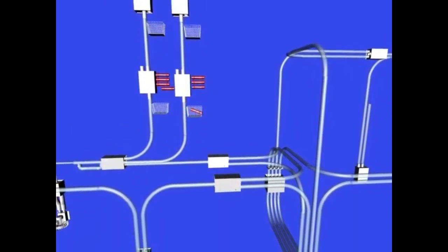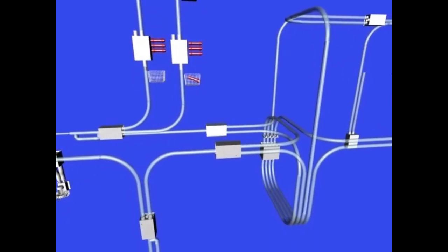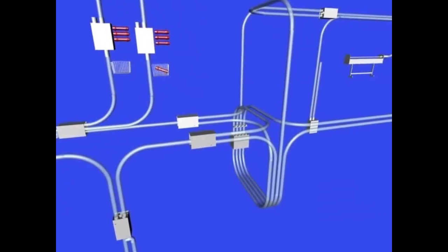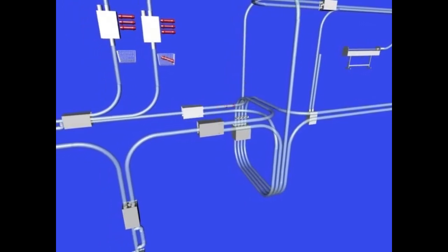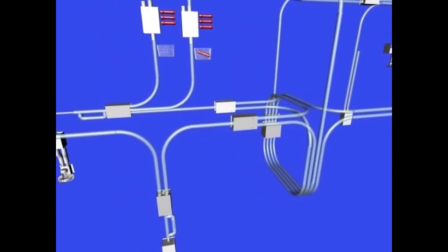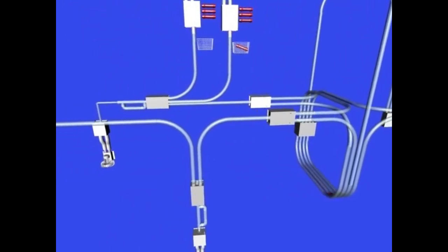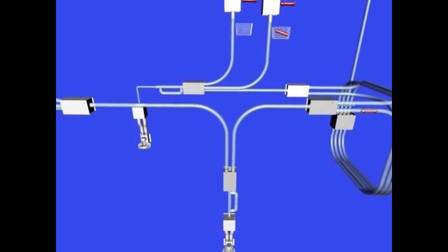Large pneumatic tube systems that cover several buildings and floors usually require several transport lines and blowers. The transport lines operate similarly to the routes of a subway network. Individual carriers often have to change lines to reach their destination.